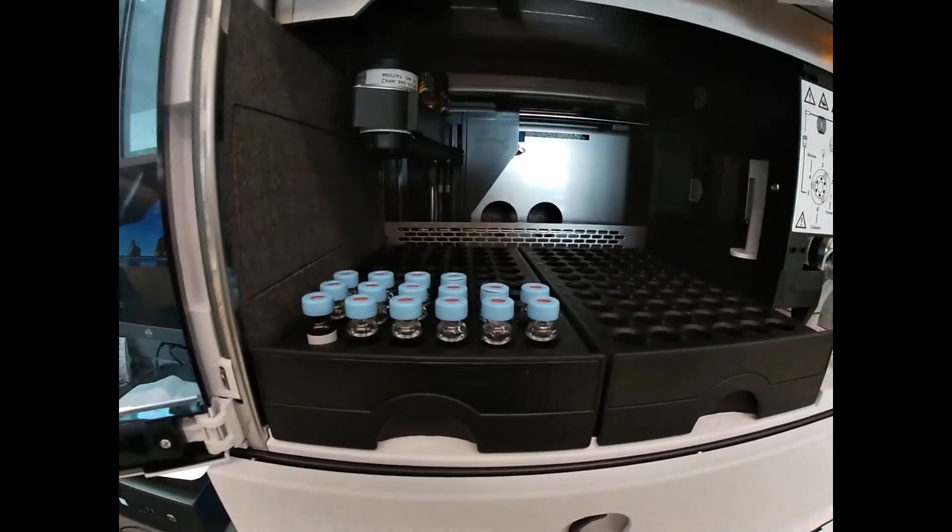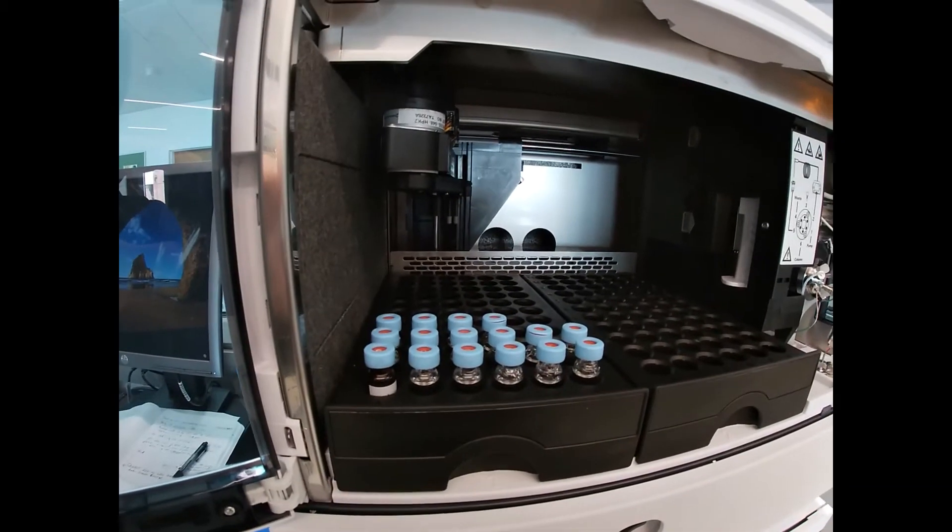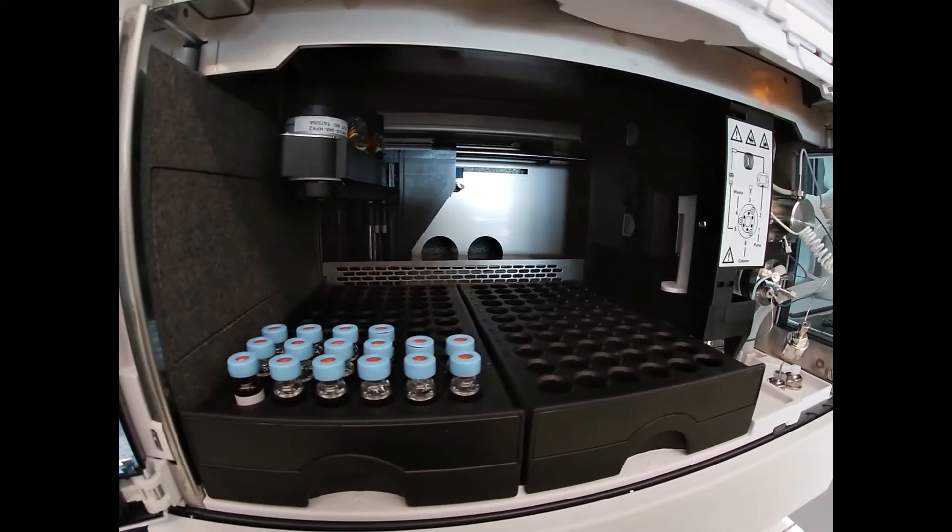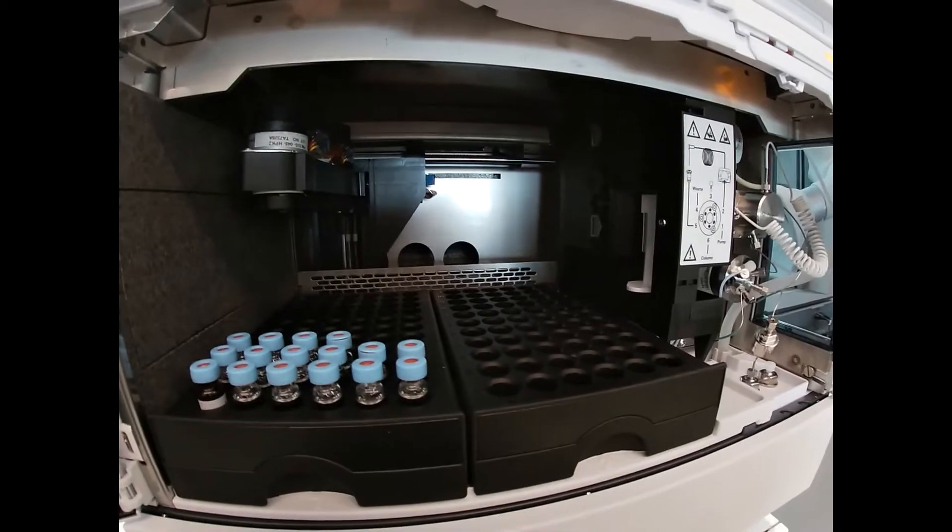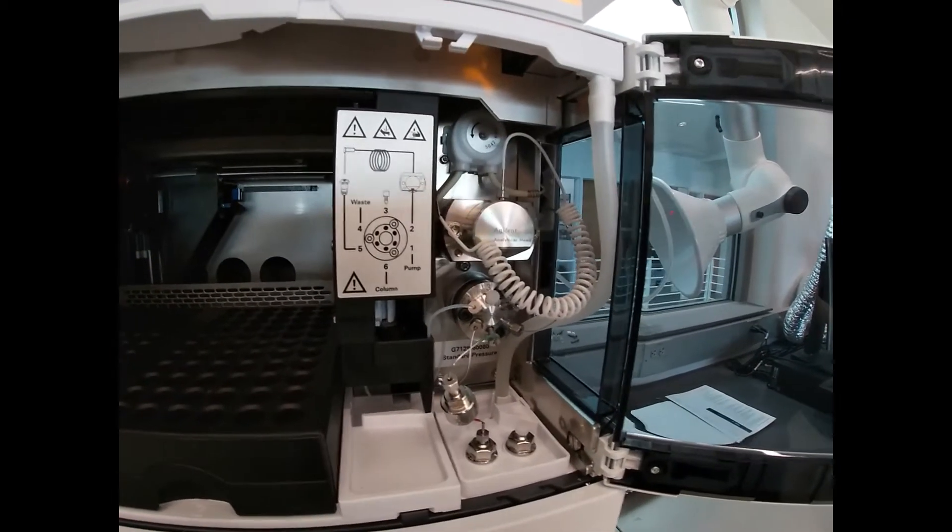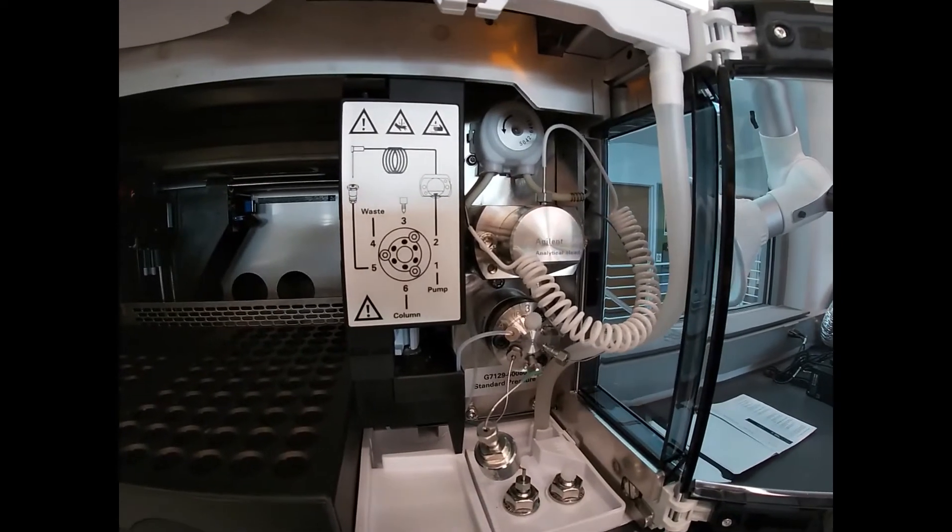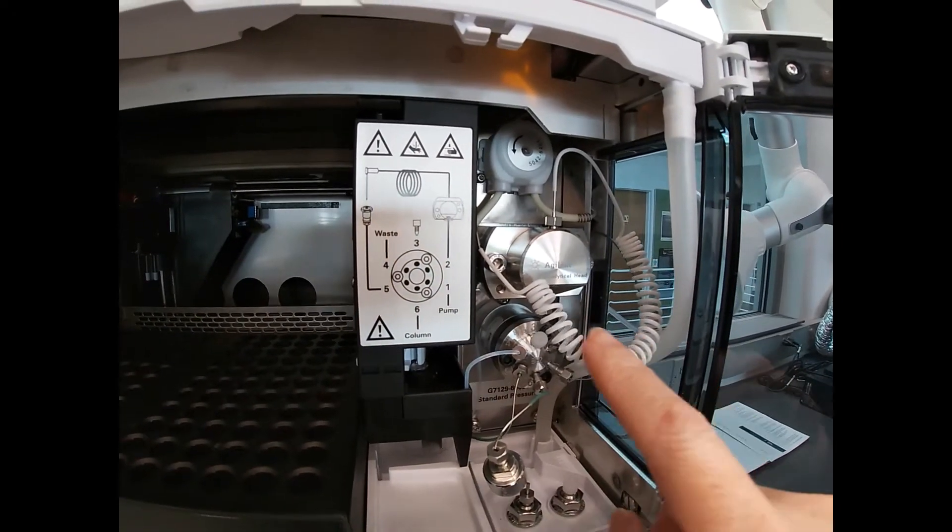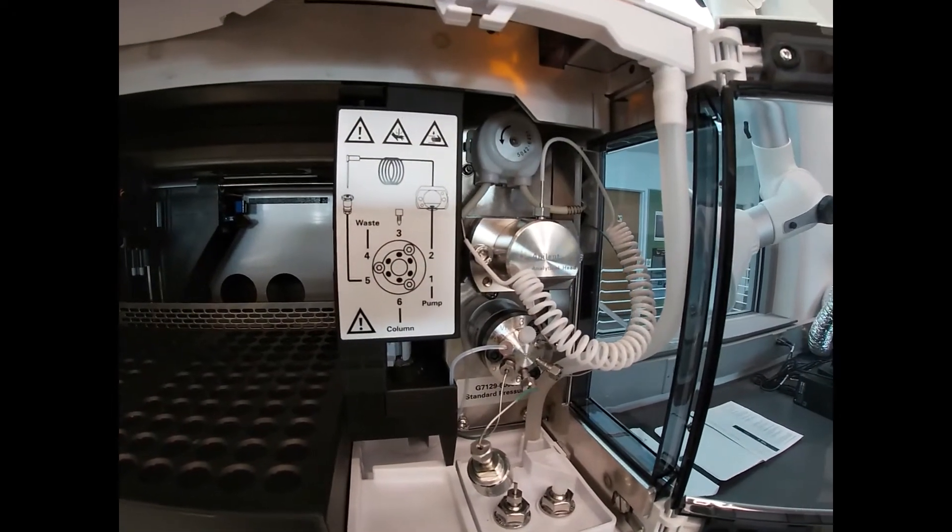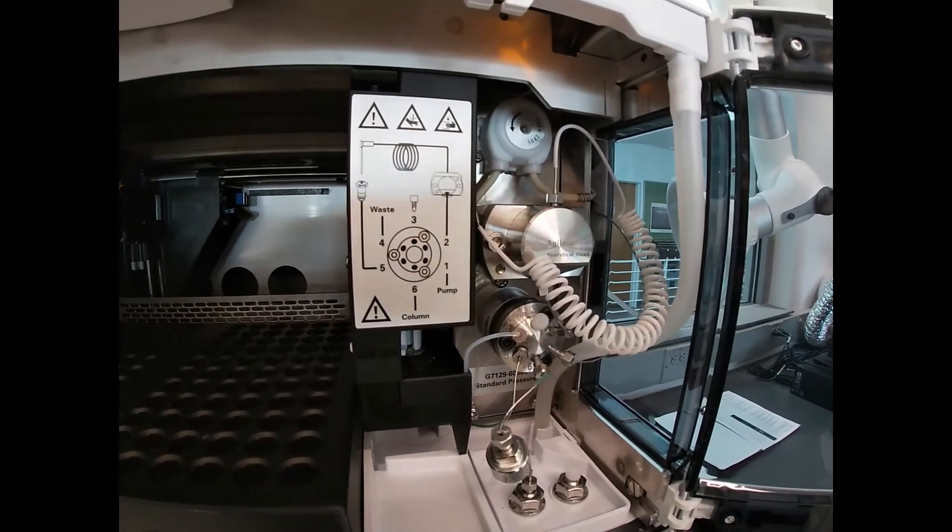We come up here and we can see our auto sampler area where we set up our samples. This is where the action happens as far as injecting. We have an injection loop here that we can fill based on what we dial in.